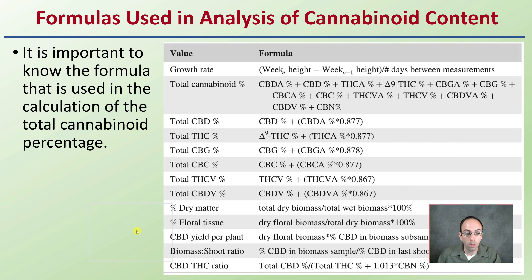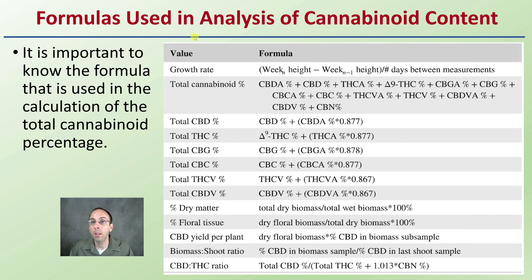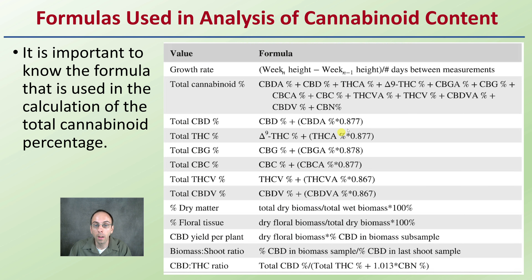So what did they use when determining these cannabinoid contents? A lot of times we're looking at totals — total CBD, THC, CBG. How are those calculated? It's important to know the formula used in the calculation for the total cannabinoid percentage. For example, CBG would be the CBGA percentage times 0.878, added to the percent CBG to get the total CBG. We can see the other conversion factors here for some of the other cannabinoids.